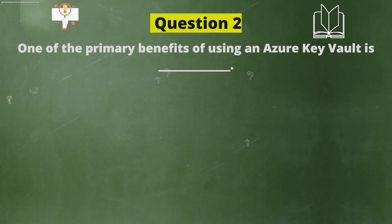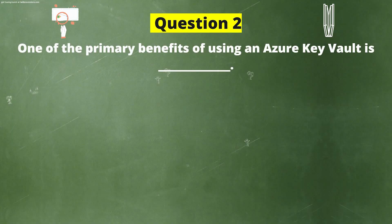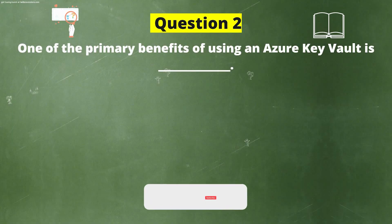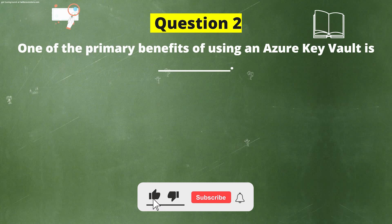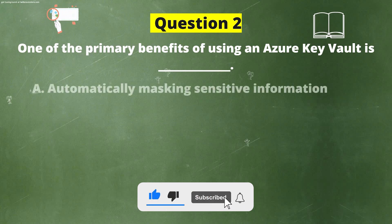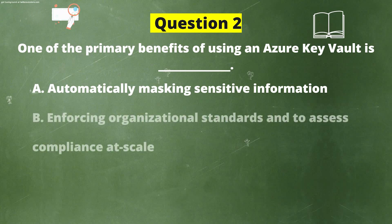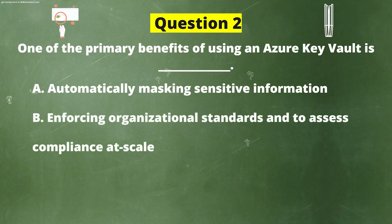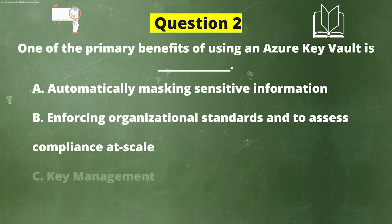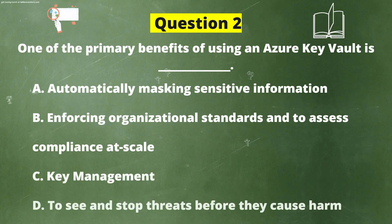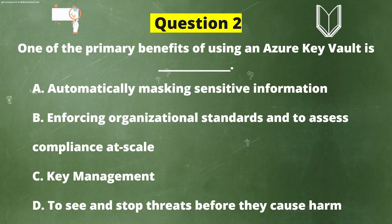Next question. One of the primary benefits of using an Azure Key Vault is: Option A — Automatically masking sensitive information. Option B — Enforcing organizational standards and to assess compliance at scale. Option C — Key management. Option D — To see and stop threats before they cause harm.